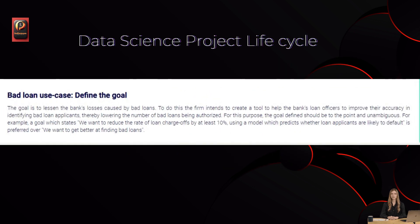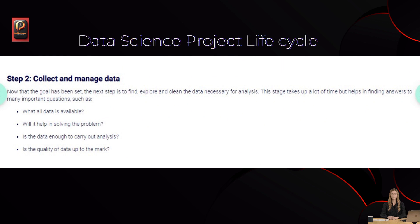Bad loan use case — Define the goal. The goal is to lessen the bank's losses caused by bad loans. To do this, the firm intends to create a tool to help the bank's loan officers improve their accuracy in identifying bad loan applicants, thereby lowering the number of bad loans being authorized. The goal defined should be to the point and unambiguous. For example, a goal which states 'we want to reduce the rate of loan charge-offs by at least 10%, using a model which predicts whether loan applicants are likely to default' is preferred over 'we want to get better at finding bad loans.'